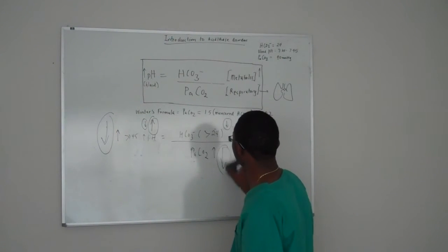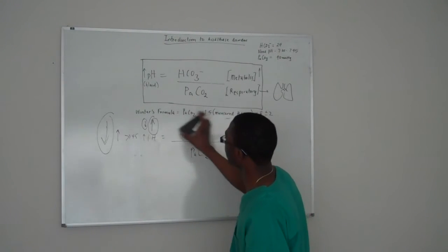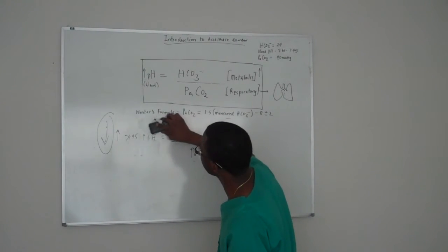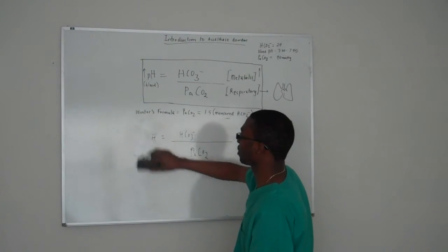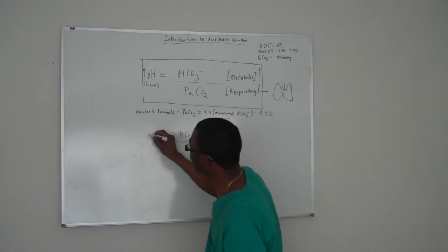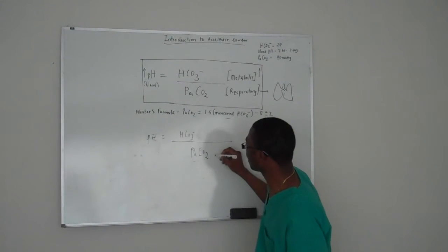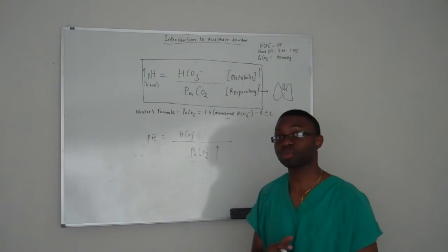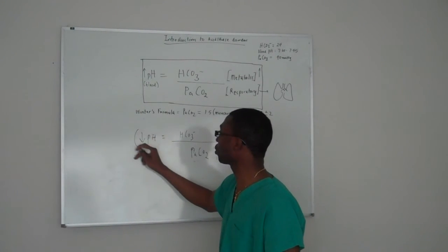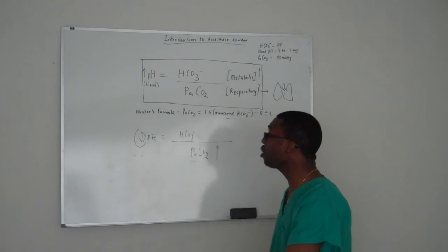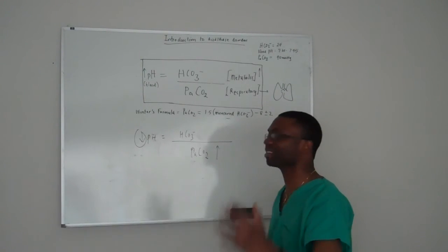For example, let's pick PCO2. I'm gonna erase some of this stuff out of the way. If you just play with this for a minute, you'll see exactly what I'm saying. If PCO2 is going up, if that's where your primary problem is coming from, that means automatically this will go down.